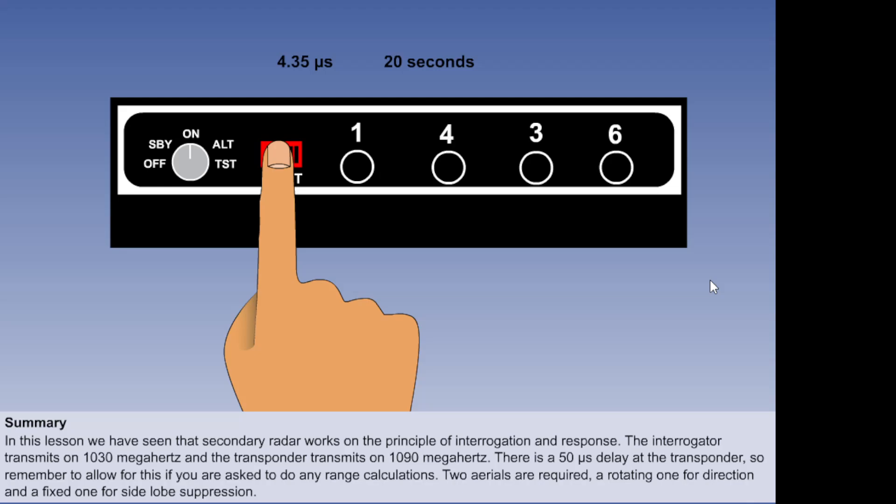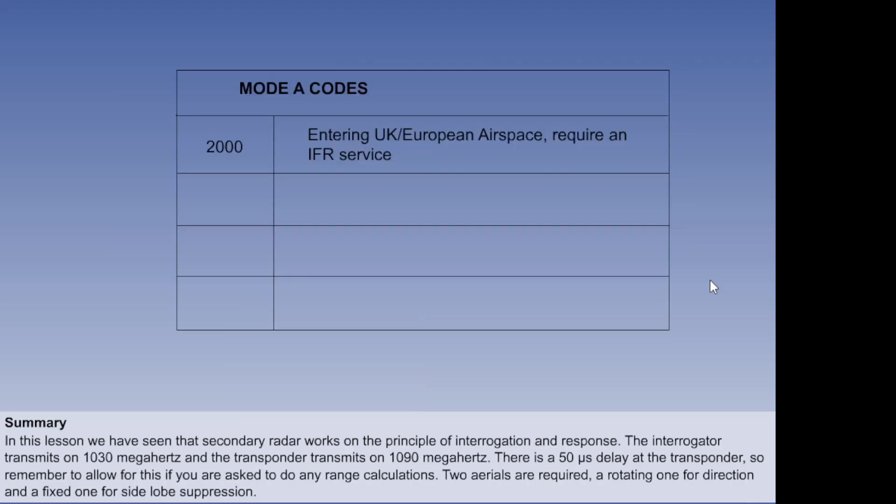The squawk ident pulse is transmitted 4.35 microseconds after the second framing pulse for 20 seconds. A mode alpha squawk of 2-0-0-0 means that the aircraft is entering UK or European airspace and requires an IFR service. 7-5-0-0 indicates unlawful interference or hijack. 7-6-0-0 indicates radio failure. 7-7-0-0 is an emergency. It means May Day. It should not be used for a pan situation.